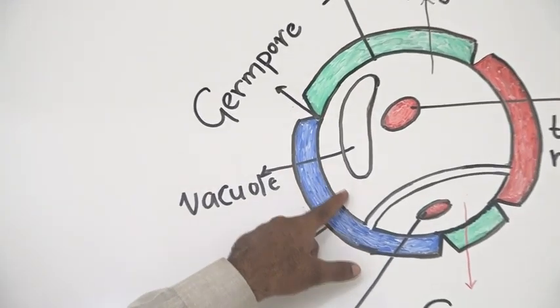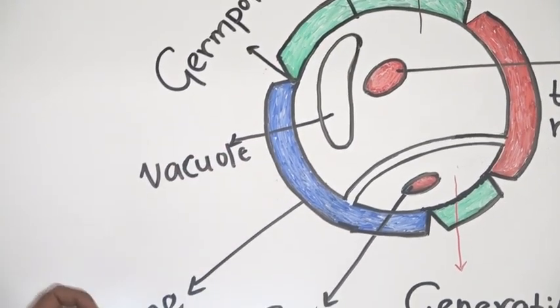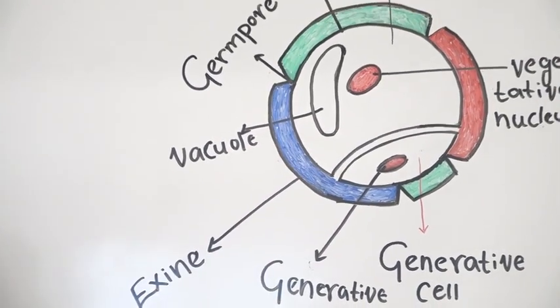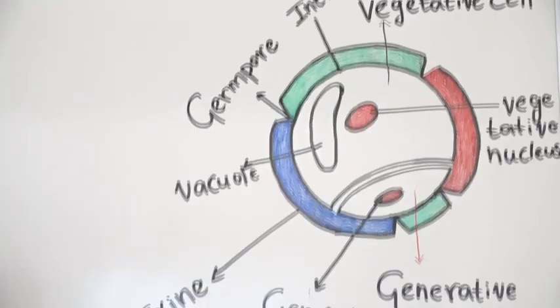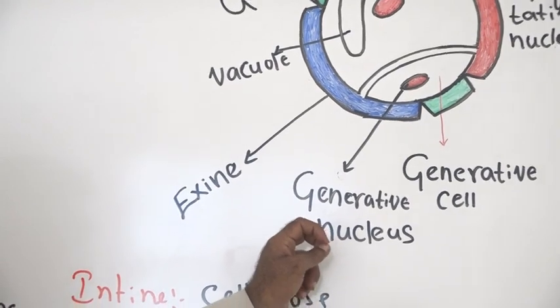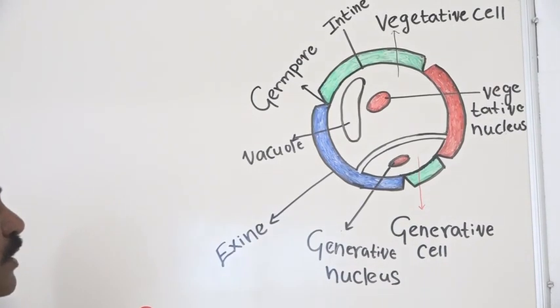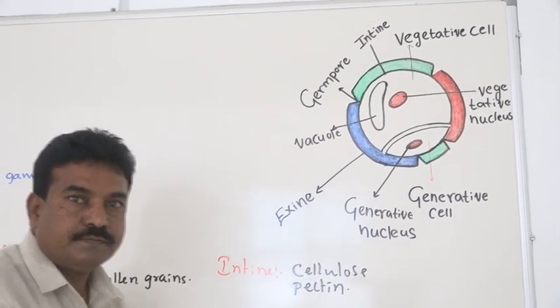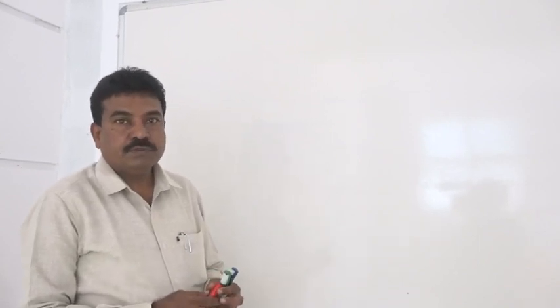Vegetative cell is haploid in nature, having large vacuole with prominent nucleus and dense cytoplasm. It nourishes the generative cell. The generative cell is smaller in size, haploid in nature, and contains less cytoplasm. It divides to form two sperms later during the development of male gametophyte.